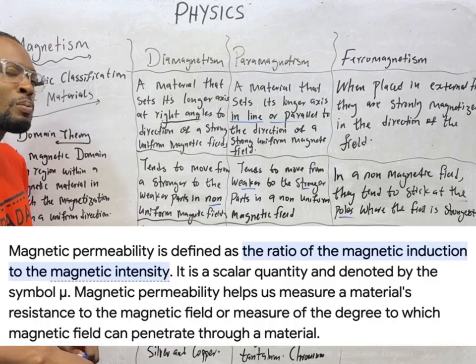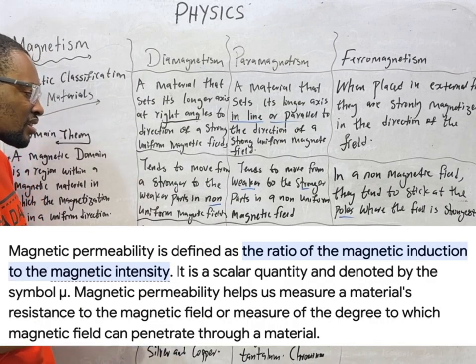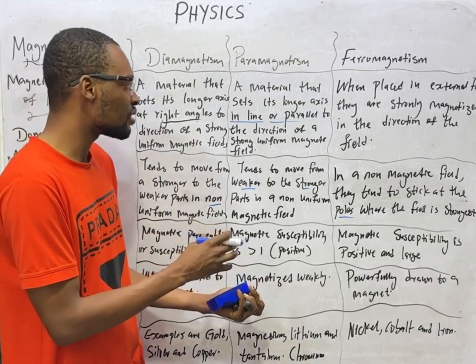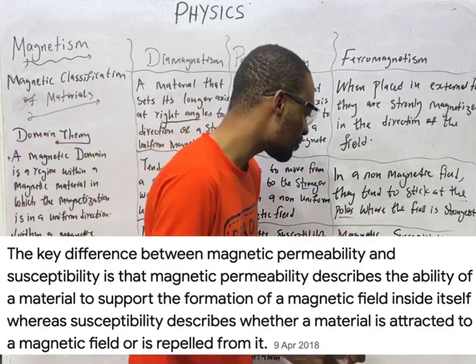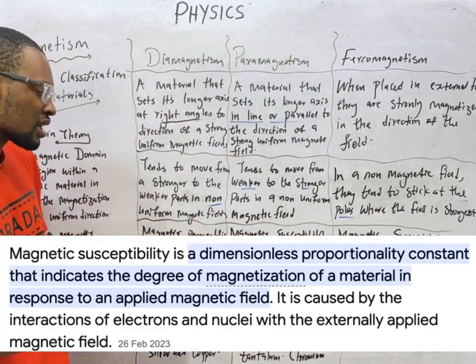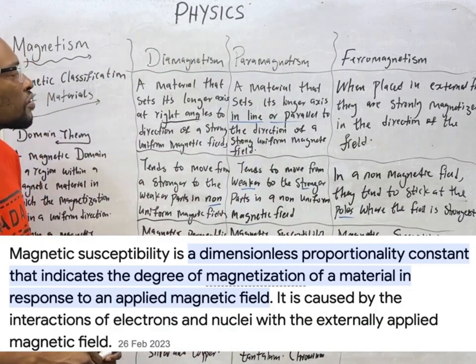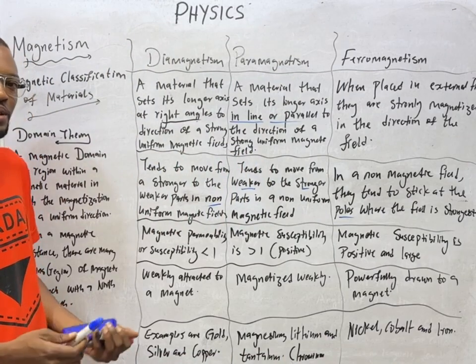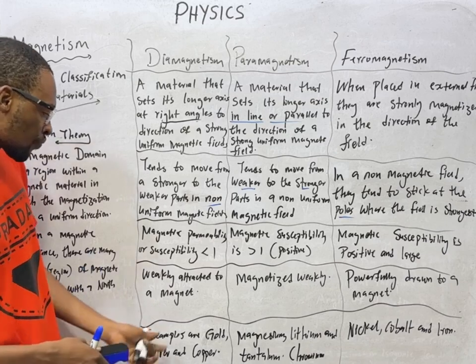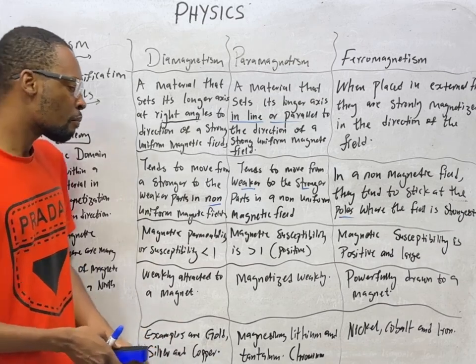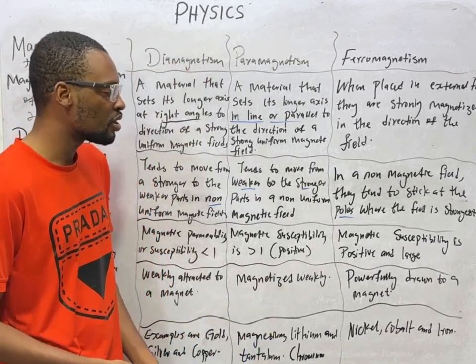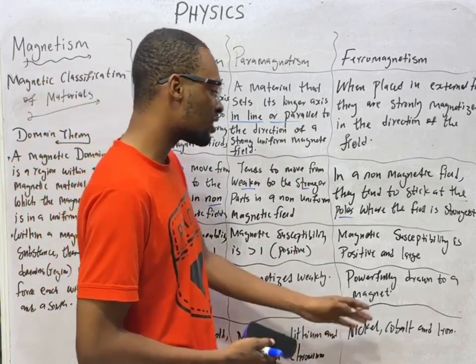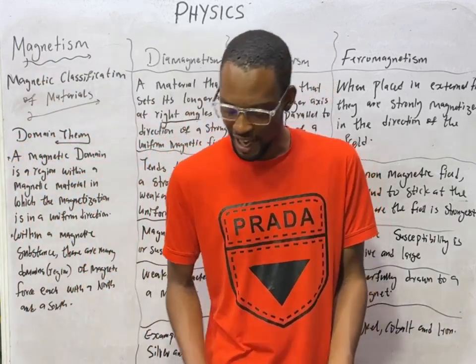Diamagnetic materials are weakly repelled by magnets. Examples include gold, silver, and copper. Paramagnetic materials are weakly magnetized; examples include magnesium, chromium, lithium, and tantalum. Ferromagnetic materials are powerfully attracted to magnets; examples include nickel, cobalt, and iron.